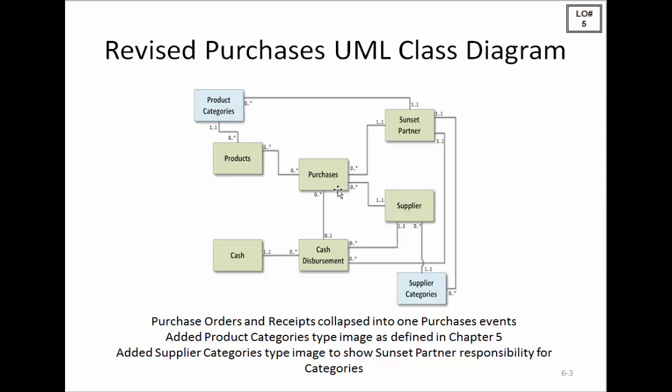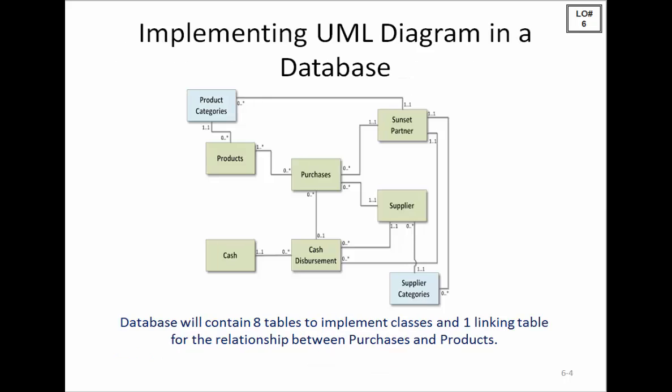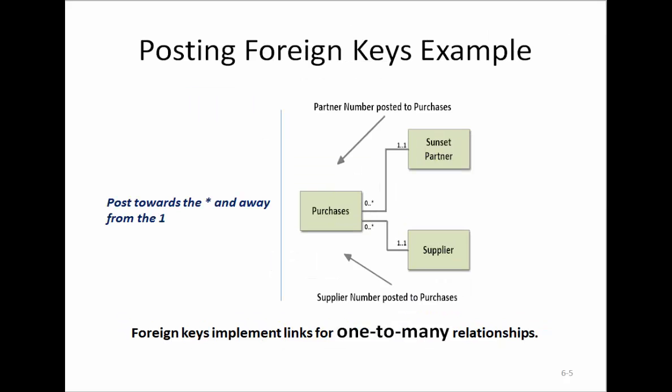To implement a database based on this, we see that we're going to have eight tables and one linking table to implement the association between purchases and products. In all other cases, we are going to post foreign keys. Remember, the rule of thumb is to post towards the many and away from the one.